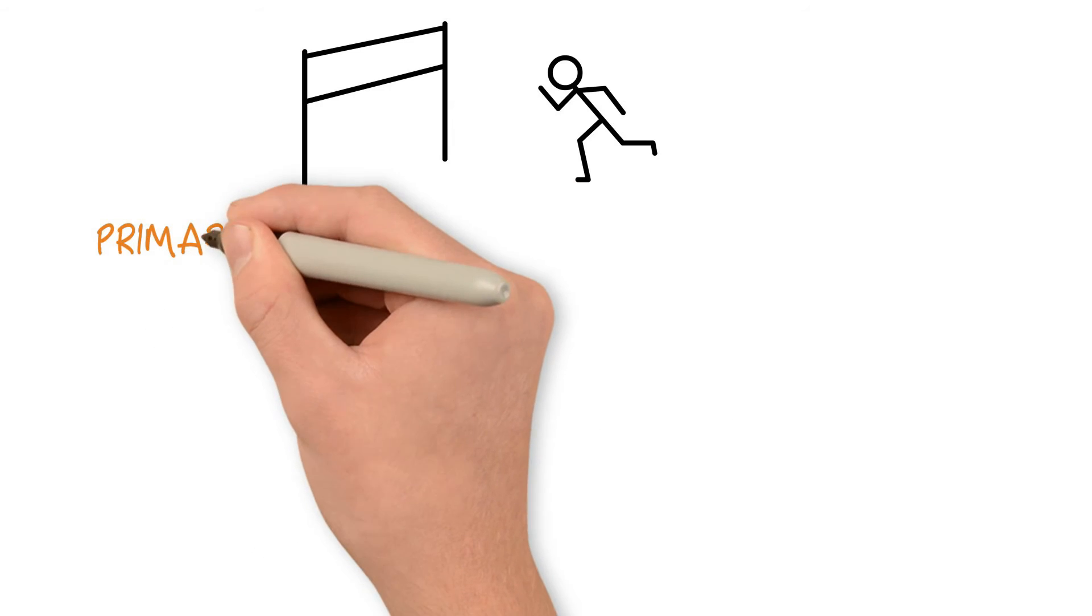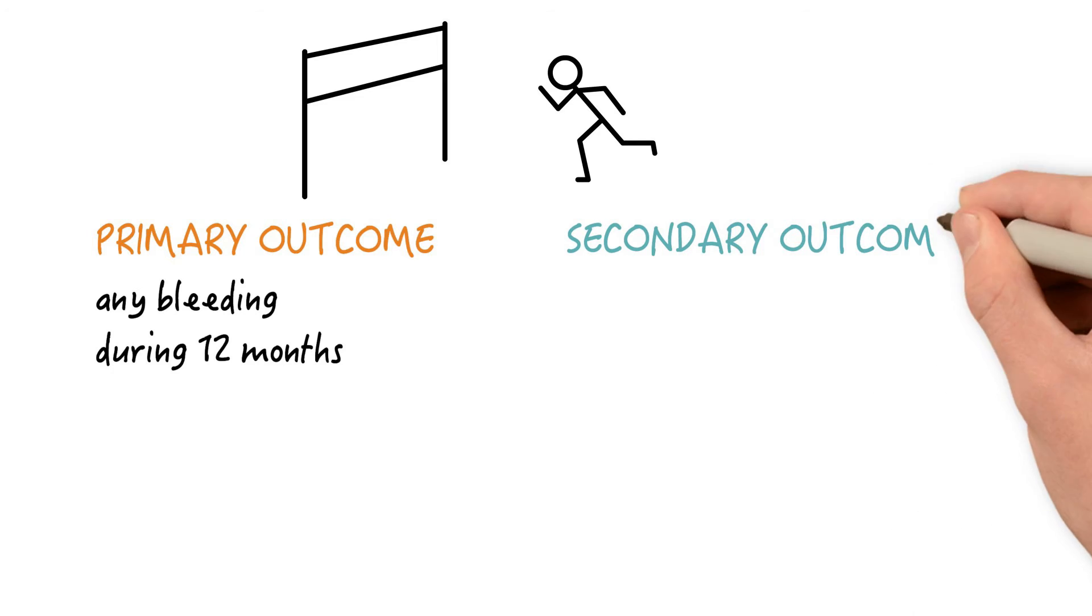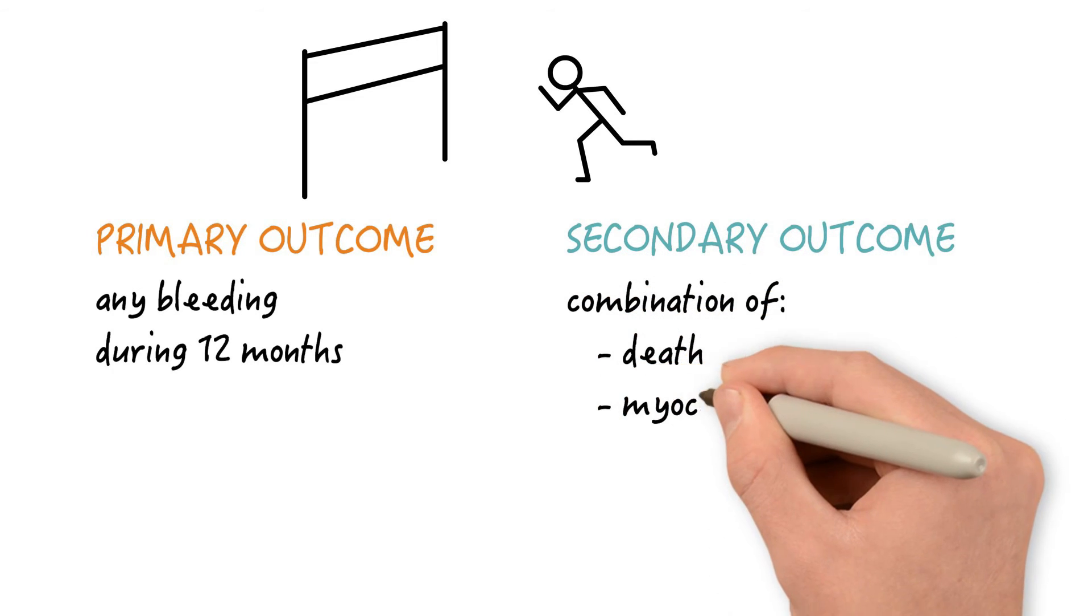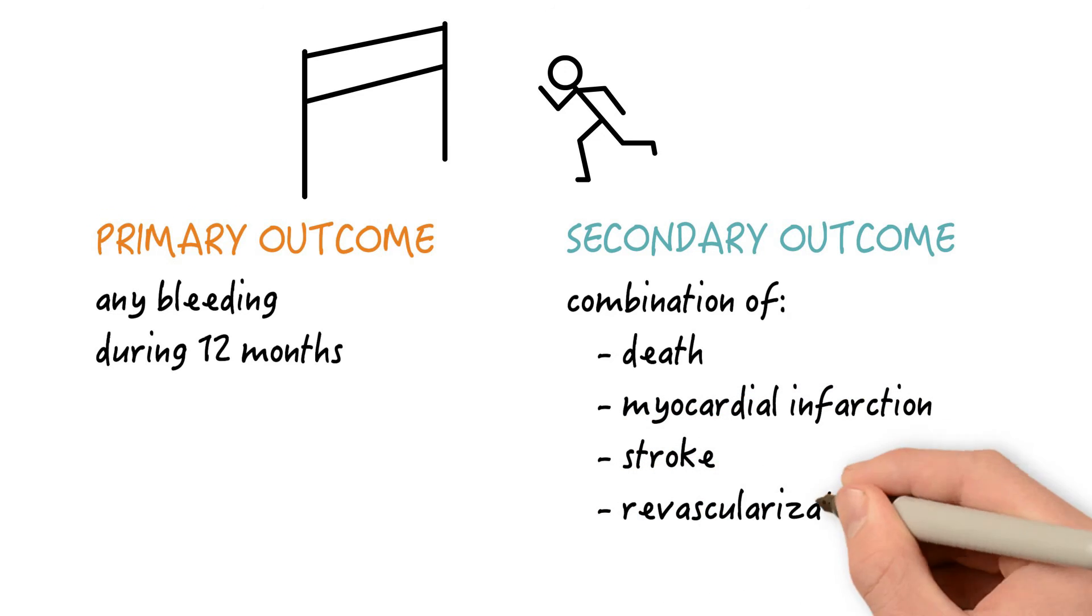The study's primary outcome was any bleeding during the 12-month study period. The secondary outcome was a combination of the following events: Death, myocardial infarction, stroke, revascularization, or stent thromboses. And here are the results.